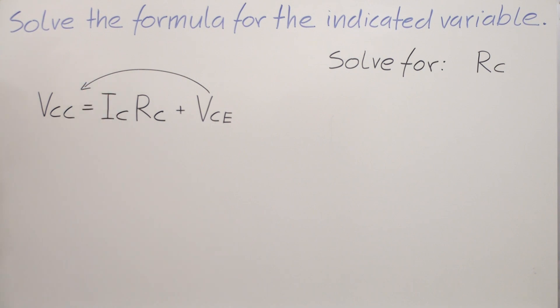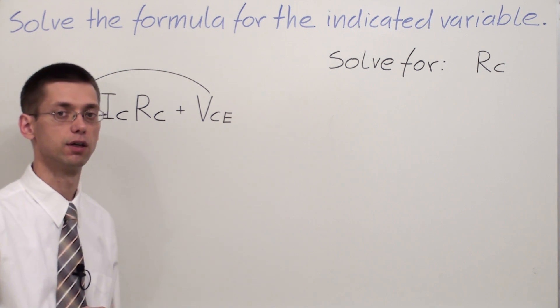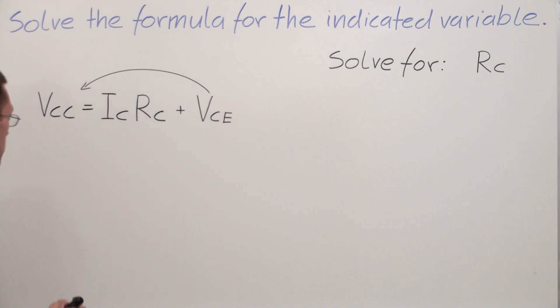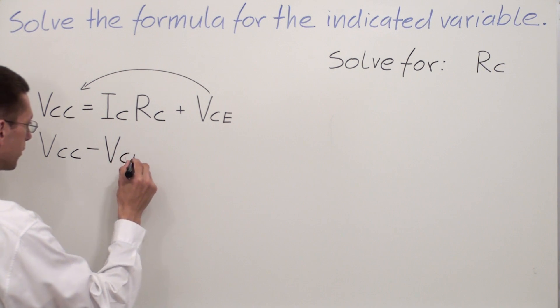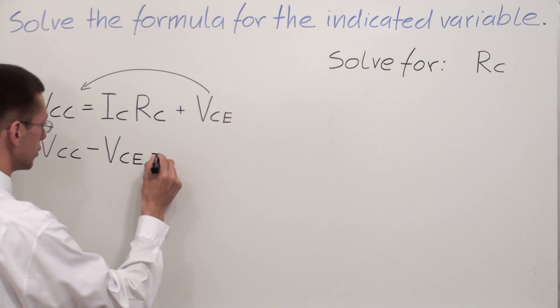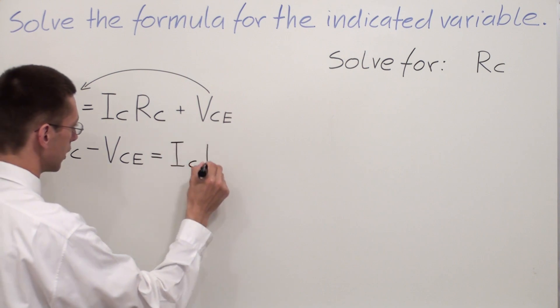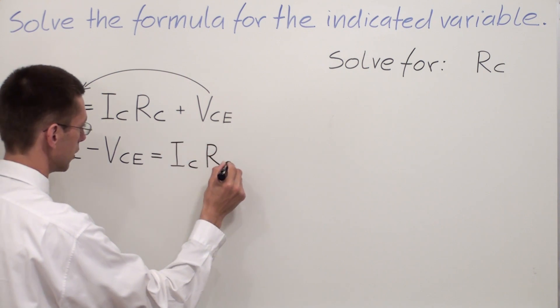Remember, any time we are moving the variable or the number or the whole term to the other side of the equal sign, we have to change the sign to the opposite. So in this case I'm going to have VCC minus, because I'm changing the sign, VCE, and this is equal to IC times RC.